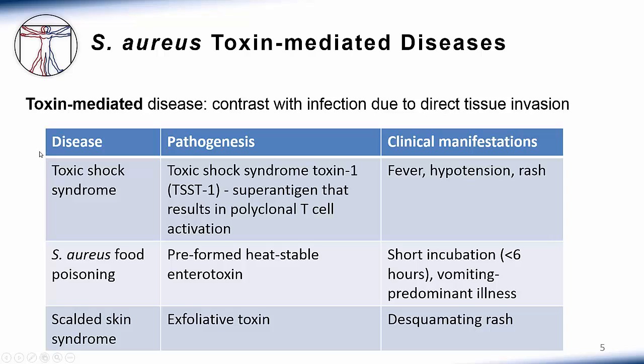Another syndrome is staph aureus food poisoning, related to a preformed heat-stable enterotoxin secreted by staph aureus. Notable features of this clinical syndrome are a short incubation period of less than six hours and a vomiting-predominant illness. The fact that this toxin is heat-stable means that cooking food that contains it will not prevent the disease.